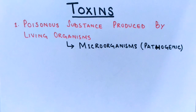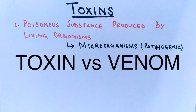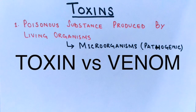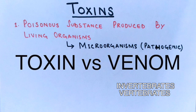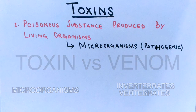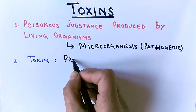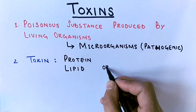When a toxin is deadly, it can cause fatalism. Make sure to distinguish between toxin and venom, because both are poisonous substances produced by living organisms. The difference is the method of delivery: venom is injected, whereas toxins are secreted when a bacterial cell invades the host. Additionally, venom is exclusive to invertebrates and vertebrates, whereas toxins are mostly produced by prokaryotes — bacterial cells.